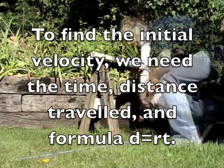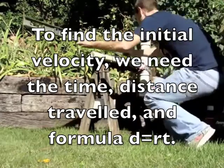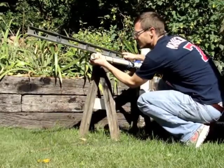To find the initial velocity, we need to find the time, distance traveled, and use the formula D equals RT.